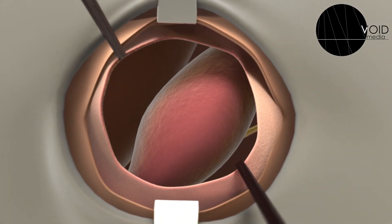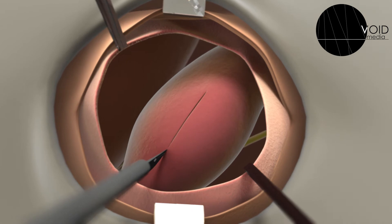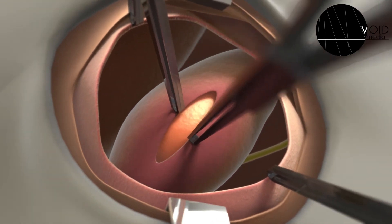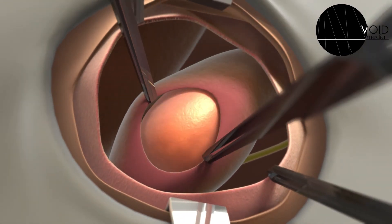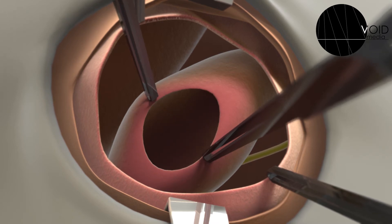Then we dissect the sac. We have two options: one to remove the sac, and the other one to reintroduce it into the abdominal cavity.